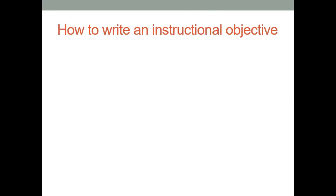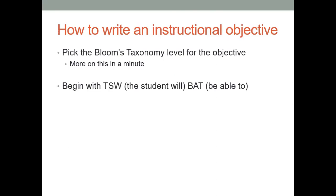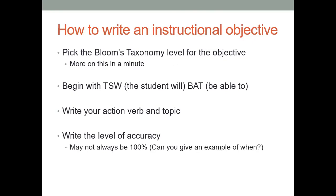So let's just look at instructional objectives, because that's the topic of this whole video. So how do we write an instructional objective? Well, you pick a Bloom's taxonomy level, which we'll get into in just a second. You begin with TSW. That stands for the student will BAT, be able to. So the student will be able to. Then you put your action verb and your topic. And then the level of accuracy is not 100 percent required. I like putting it there because it helps me have a benchmark of what I'm looking for. It may or may not always be 100 percent. So for instance, if you're teaching something that's difficult, it's day one of the quantum mechanical model, you're probably not going to be able to have your students reach 100 percent on day one. So maybe your goal for day one is, I just want them to understand it 50 percent.